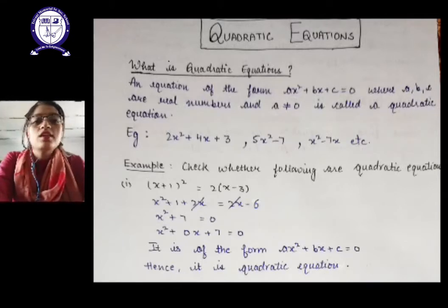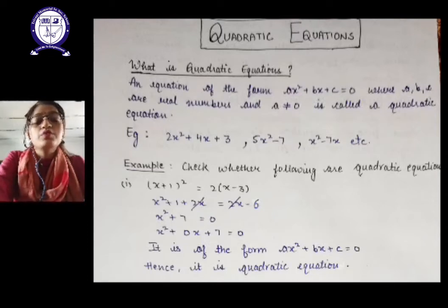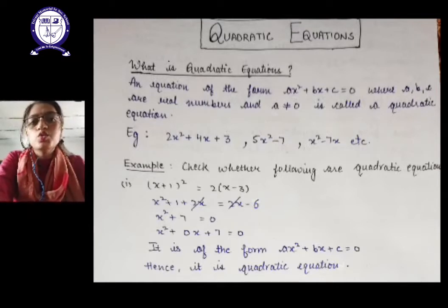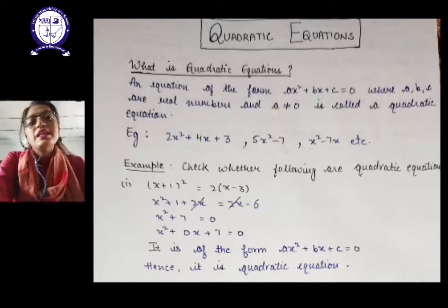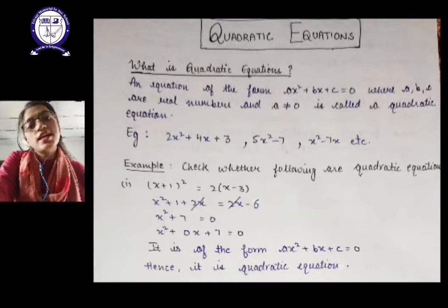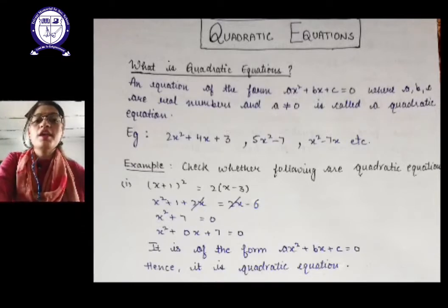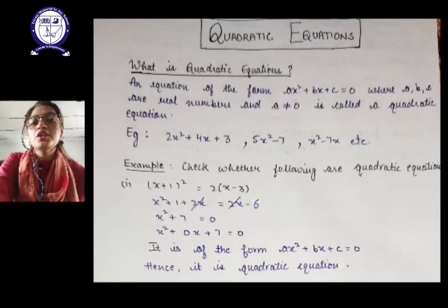There are several examples of quadratic equations: 2x² + 4x + 3, where the degree is 2 and highest power is 2; then 5x² − 7; x² − 7x, and so on. The very first exercise, Exercise 4.1, focuses on checking whether a particular equation given to you is quadratic or not.